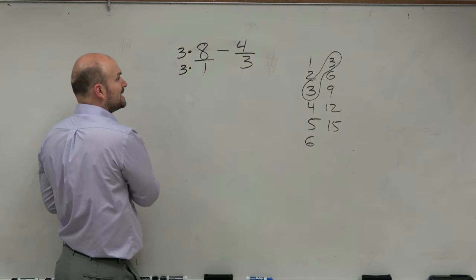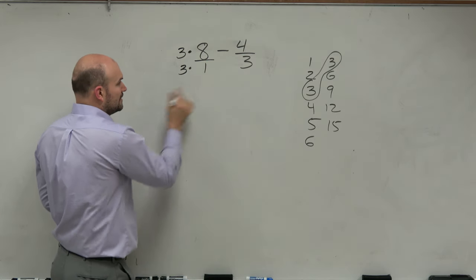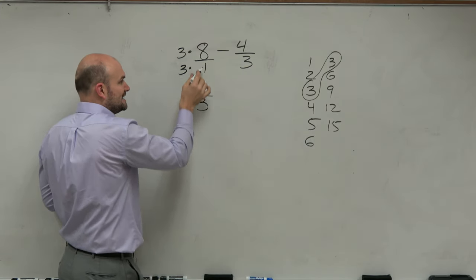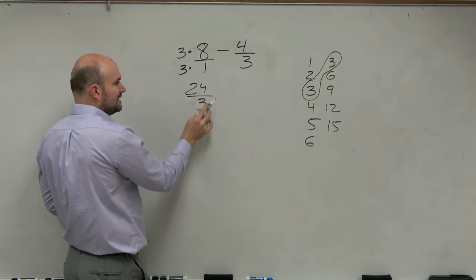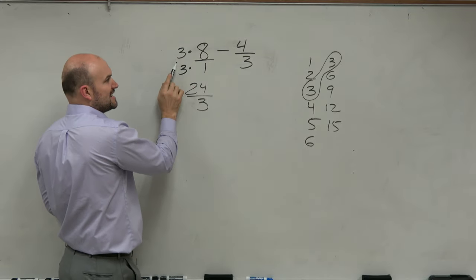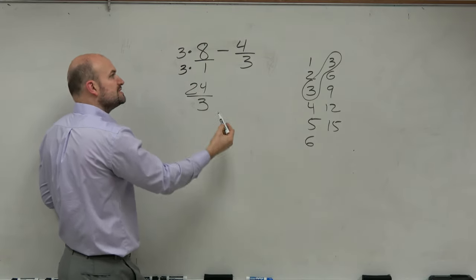However, if I multiply by 3 on the numerator and the denominator, now I have produced a fraction that is equivalent to 8. Because 24 over 3, 3 divides into 24 eight times. So as long as you multiply by the same value on the top and the bottom, you're producing an equivalent fraction.